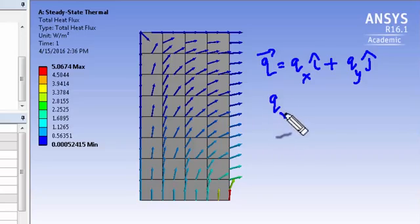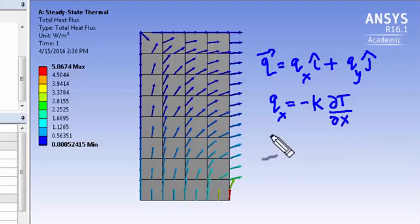And the x component is related to the gradient of the temperature in the x direction, and similarly for the y component. So what it's done is it's gone to the temperature interpolation and it's differentiated it to find qx and similarly for qy.